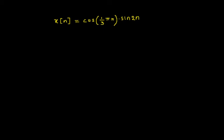Welcome to the video lecture on periodic and aperiodic signals. In this video we will consider a discrete time signal x(n) which is a product of two sinusoidal signals: cosine of 1 by 3 pi times n and sine of 2n. The task is to determine if this signal is periodic or aperiodic, and if periodic, what is the fundamental period.